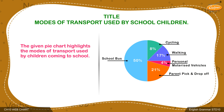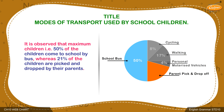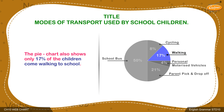We start off by stating the given pie chart highlights the modes of transport used by children coming to school. The diagram clearly shows maximum children travel to school by bus. Students, remember it is very important to mention the percentage proportion given in the diagram. Thus, we write: it is observed that maximum children, that is 50% of the children, come to school by bus, whereas 21% of the children are picked and dropped by their parents. The pie chart also shows only 17% of children come walking to school.